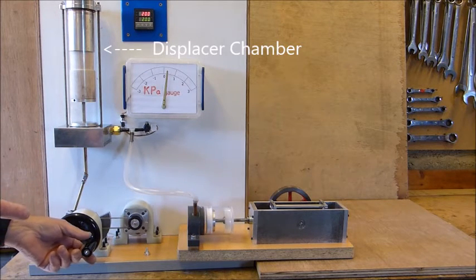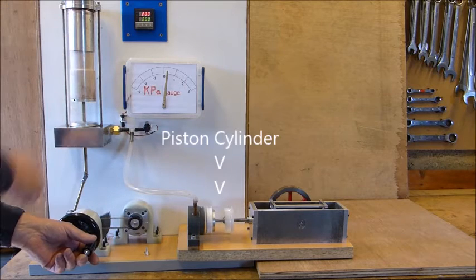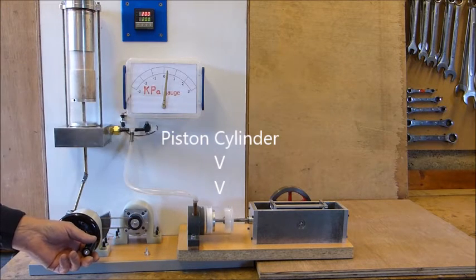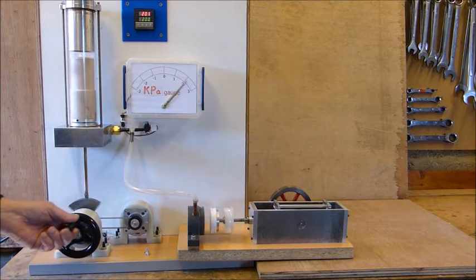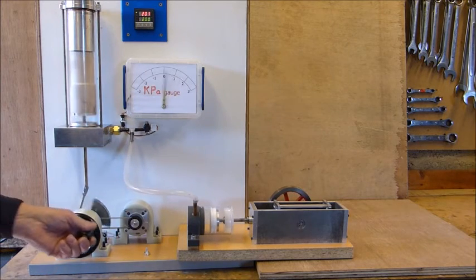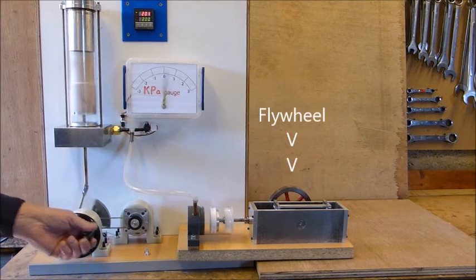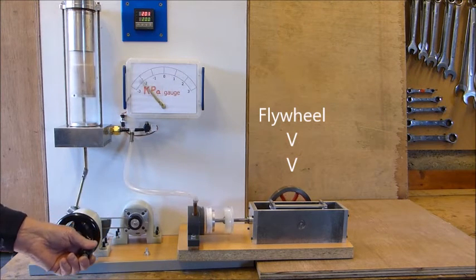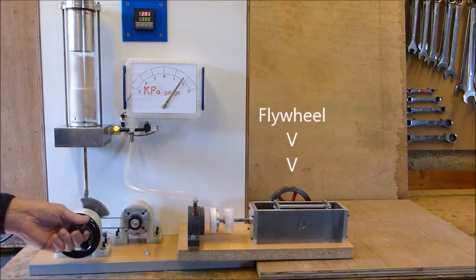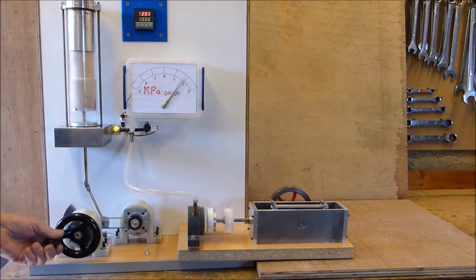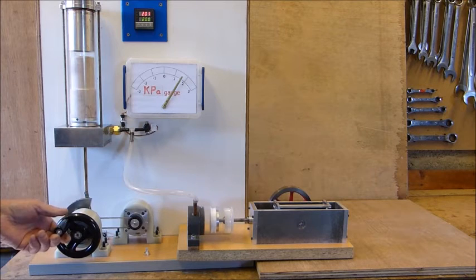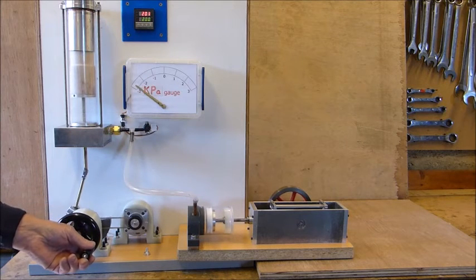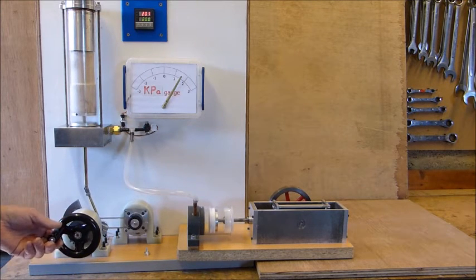Now to start with I will operate the engine and move the displacer manually and you will see the working piston move. The effective pressure is two and a half kilopascals or about 0.3 of a pound per square inch. So every time the displacer moves the flywheel will rotate slightly.